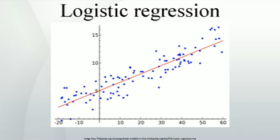Frequently, logistic regression is used to refer specifically to the problem in which the dependent variable is binary — that is, the number of available categories is two — and problems with more than two categories are referred to as multinomial logistic regression, or, if the multiple categories are ordered, as ordered logistic regression. Logistic regression measures the relationship between a categorical dependent variable and one or more independent variables, which are usually but not necessarily continuous, by using probability scores as the predicted values of the dependent variable. As such, it treats the same set of problems as does probit regression using similar techniques.